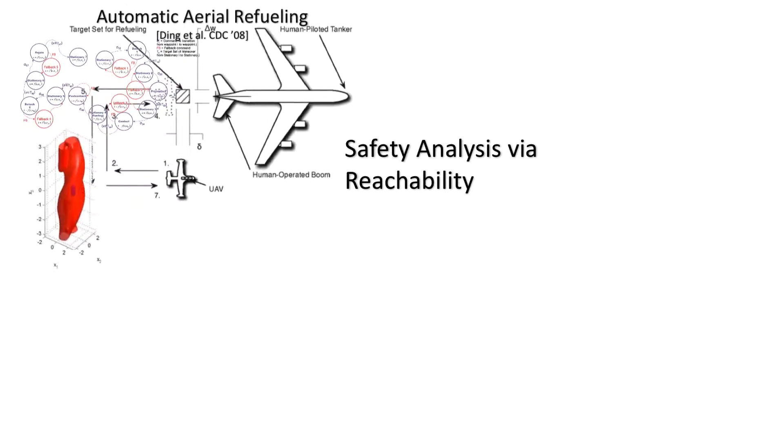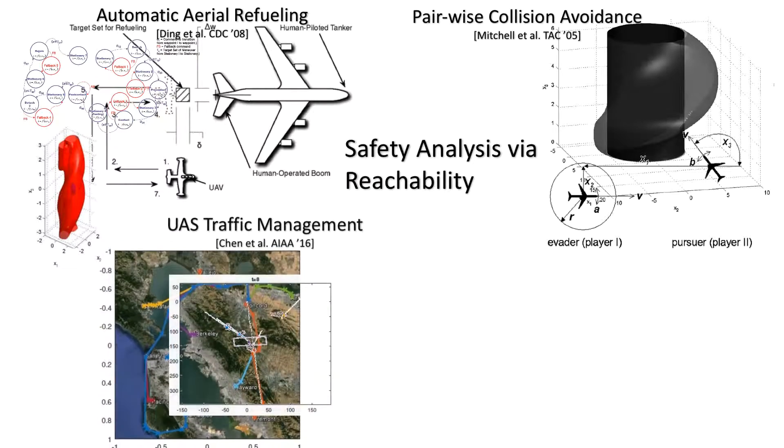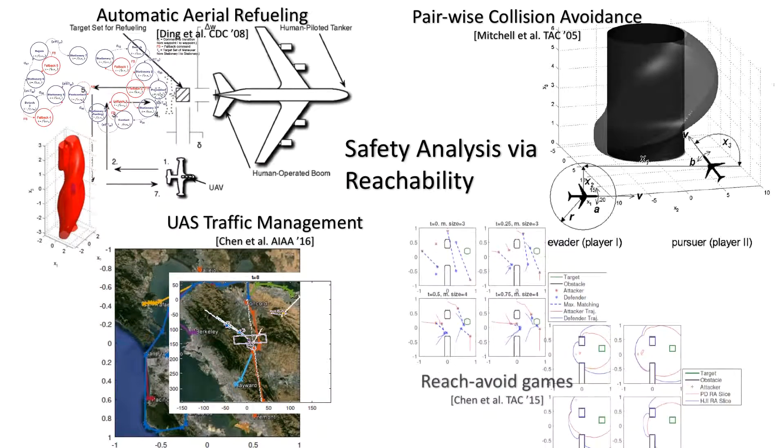One way to analyze these systems is through reachability analysis, which incorporates optimal control and differential game theory and has been successfully used for many applications involving low-dimensional dynamics.